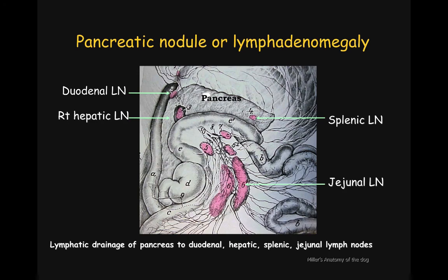A pancreatic nodule can be difficult to distinguish from enlarged lymph nodes, and we can see why. Duodenal lymph nodes, hepatic lymph nodes, splenic lymph nodes, as well as the chain of jejunal lymph nodes are all in the neighborhood of the pancreas and all contribute to the lymphatic drainage of the pancreas. Therefore, a small pancreatic nodule may be difficult to distinguish from an adjacent, closely positioned enlarged lymph node.